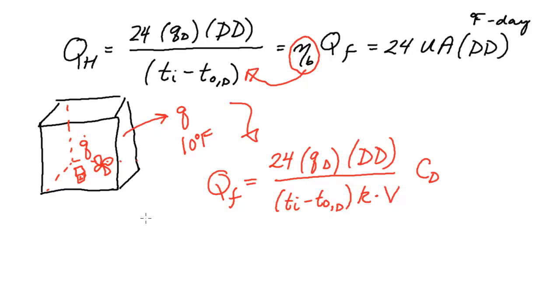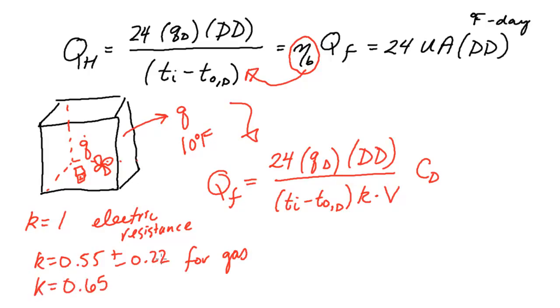And so K is equal to 1 if you have electric resistance heating, 100% effective. K is 0.55 plus or minus 0.22 for gas heating. And could assume that K is 0.65 for, quote, newish, end quote, homes.